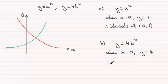So therefore, we've got that it intersects at (0, 4). Alright.